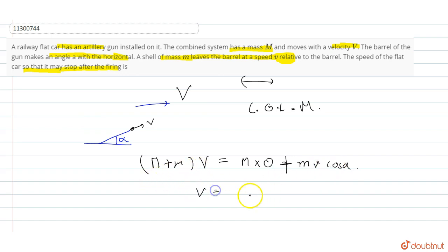If I solve for capital V, then how much is it? Small v cos alpha divided by M plus m.